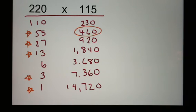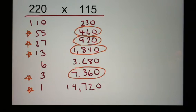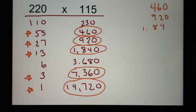So, across from 55 is 460. Across from 27 is 920. Across from 13 is 1,840. Across from 3 is 7,360. And across from 1 is 14,720. So, I'm going to add those all up. And then I will have my solution.